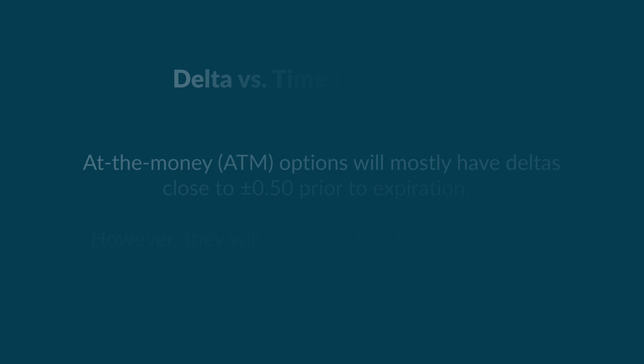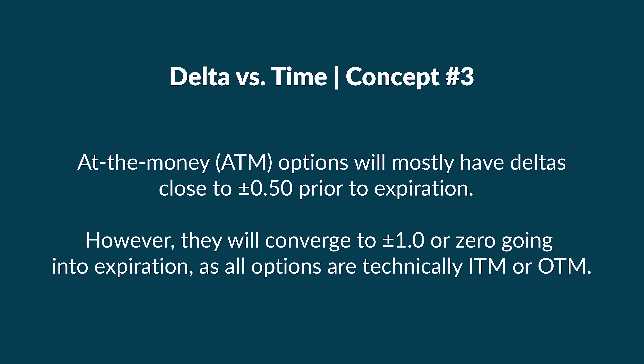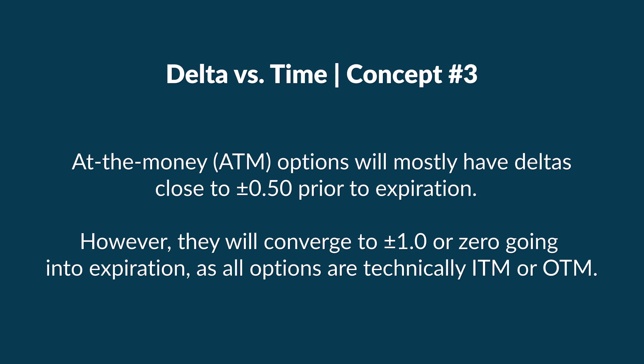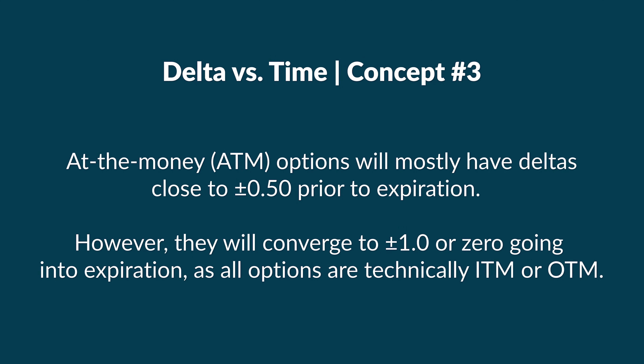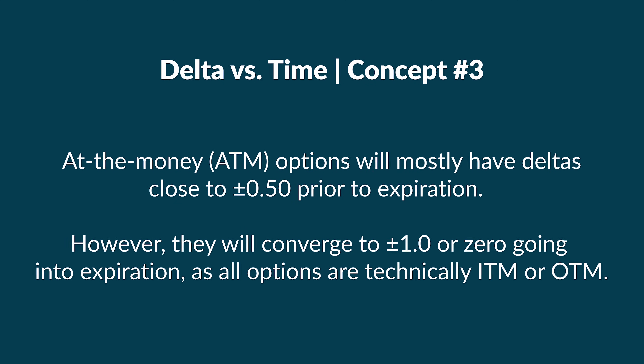Lastly, when we look at at-the-money options, we'll see their deltas remain fairly close to positive or negative 0.5 as time passes. But in the moments immediately before expiration, an option is either going to be in the money or out of the money, and therefore the previous rules will apply. If an at-the-money option is in the money leading into the final moments before expiration, its delta will approach positive or negative 1.0. If the option is out-of-the-money going into expiration, its delta will approach zero. To clarify: when I say positive I'm referring to call options, and when I say negative I'm referring to put options.